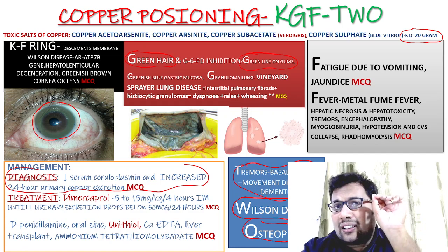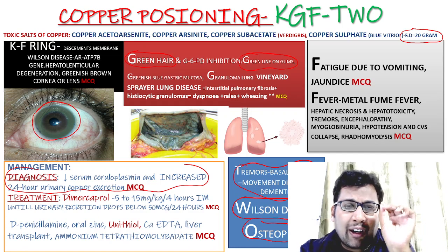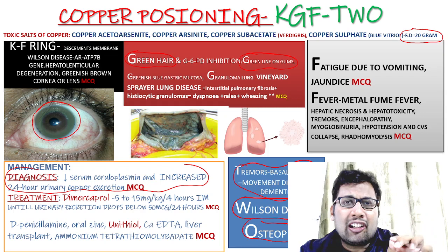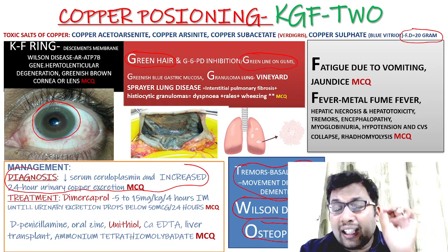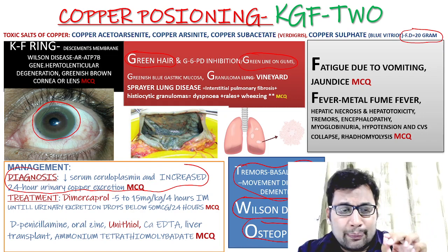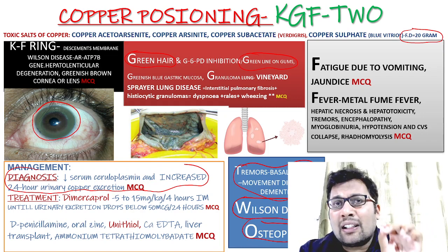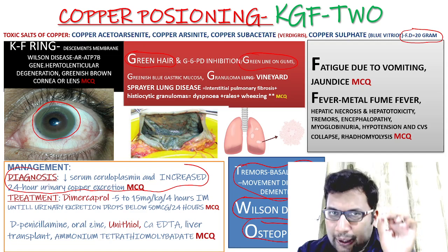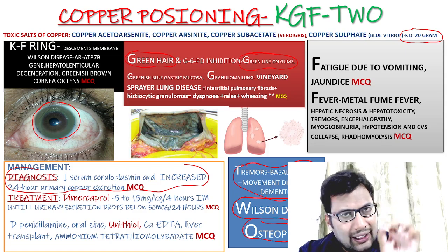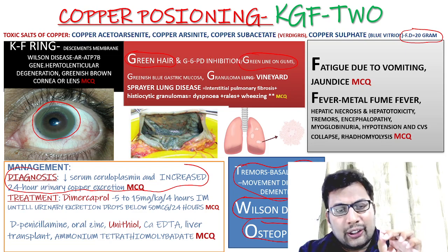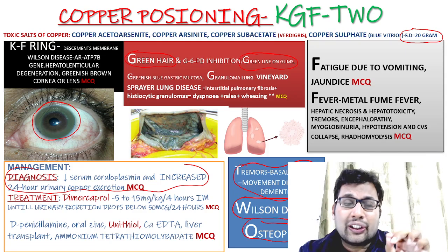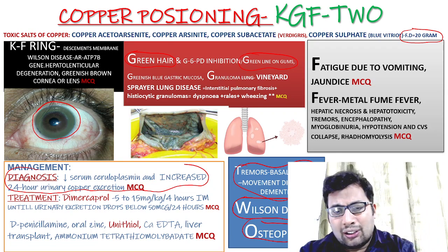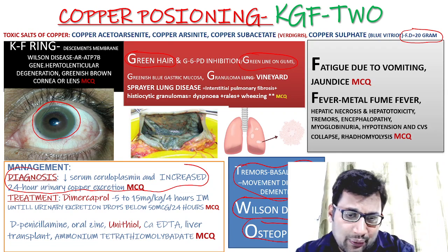The treatment is Dimercaprol 5 to 15 mg per kg body weight, 4-hourly intramuscularly, until urinary excretion becomes less than 50 micrograms per 24 hours. You can also use Penicillamine, oral zinc, Unithiol, Calcium EDTA, Ammonium Tetrathiomolybdate, or liver transplantation.